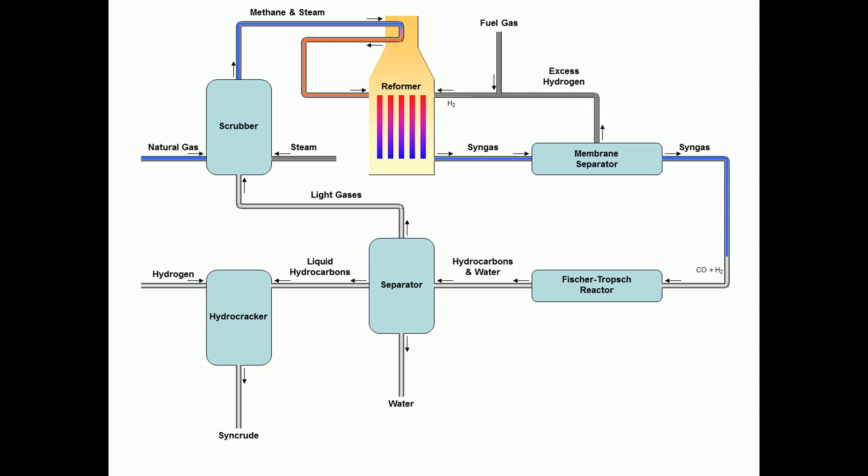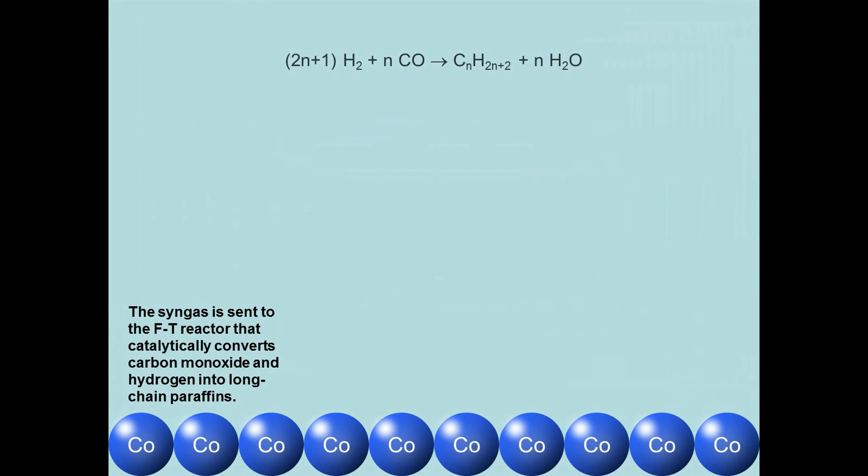Then the syngas is ready for the Fischer-Tropsch reaction. In the Fischer-Tropsch reactor, the syngas catalytically converts carbon monoxide and hydrogen into long-chain paraffins. This is the main reaction for gas-to-liquid process.